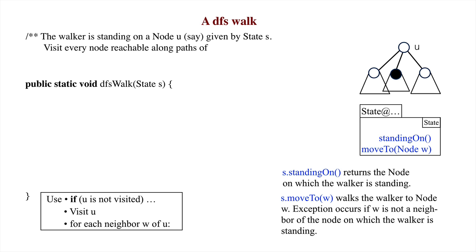Second, as usual, every node reachable along paths of unvisited nodes from u are to be visited.